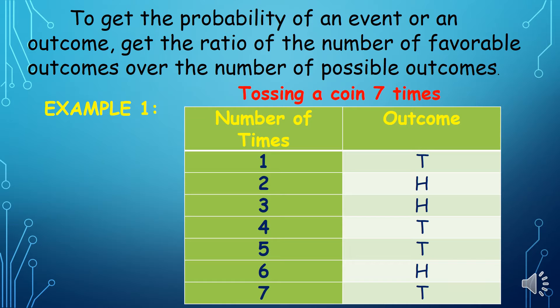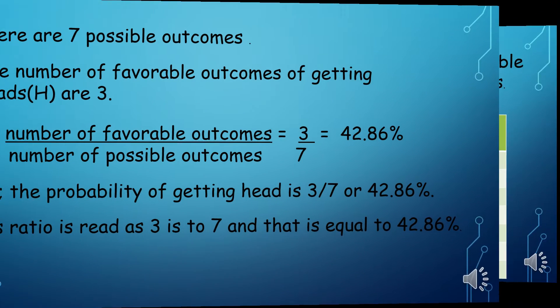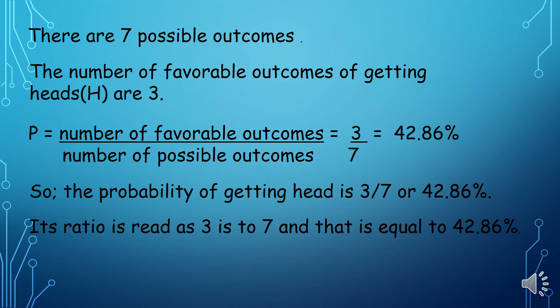Example number 1 is tossing a coin 7 times. The table shows the number of times the coin was tossed and the outcome every time the coin was tossed. There are 7 possible outcomes. The number of favorable outcomes of getting heads are 3.